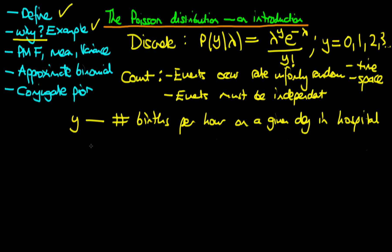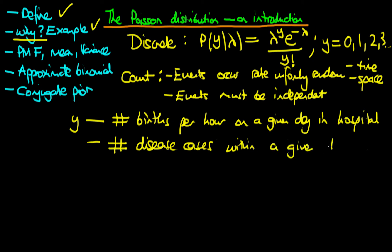An example of events occurring uniformly through space: imagine y measures the count of disease cases for a particular disease within a given town. We imagine looking at different towns with the same population, so the mean number of disease cases per year is the same regardless of town. With no systematic differences between towns, the count of disease cases might adequately be modelled by a Poisson distribution.